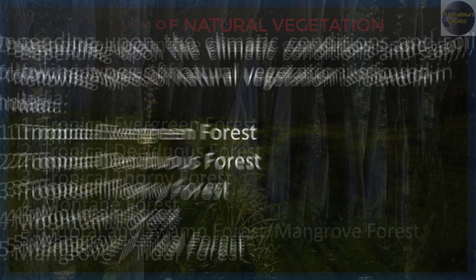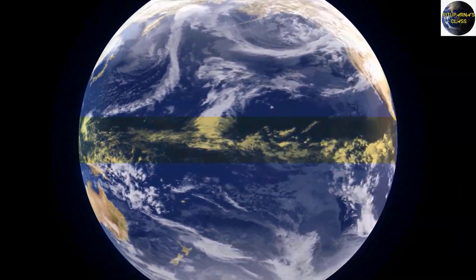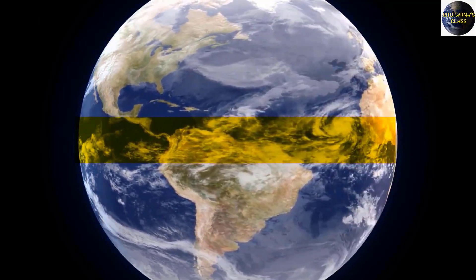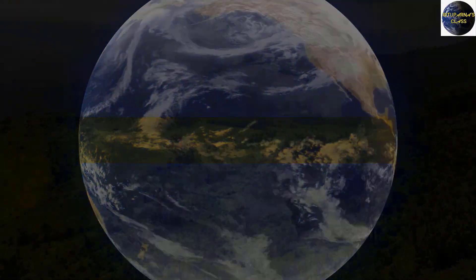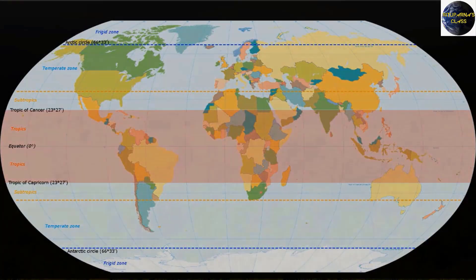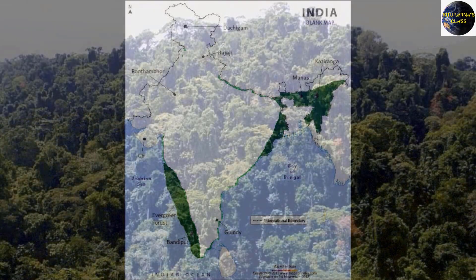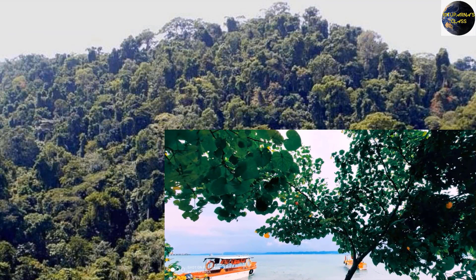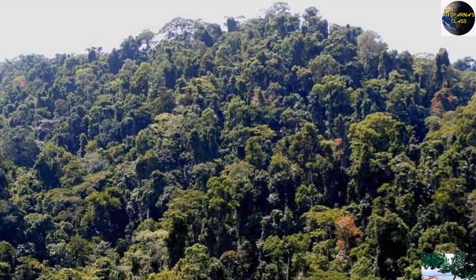The first one is the tropical evergreen forest. The word 'tropical' means the tropical region, and 'evergreen' means green leaves throughout the year. Tropical evergreen forests remain green throughout the year and exist in the tropical region of India. These forests are found in the western slopes of the Western Ghats, the hills of the northeastern region, and the Andaman and Nicobar Islands.